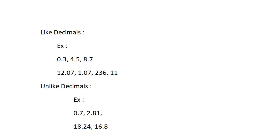Like and unlike decimals. Decimals with the same number of decimal places are called like decimals. For example, 0.3, 4.5, and 8.7. Here the decimal place values are the same, so they are called like decimals.